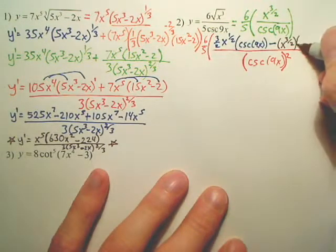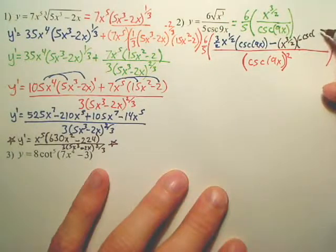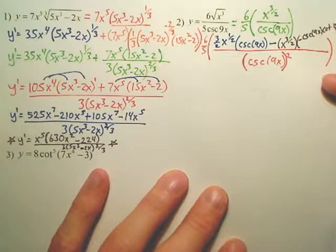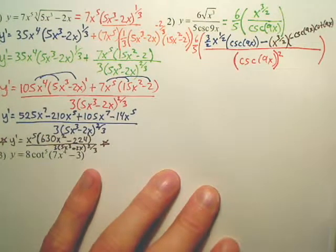So this one's going to be negative cosecant. Don't forget 9x. Leave the 9x. Cotangent. Don't forget the 9x.